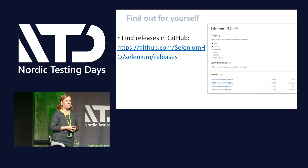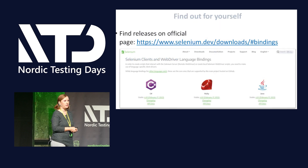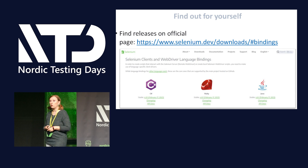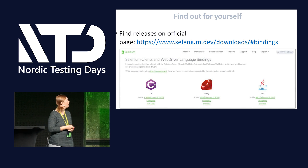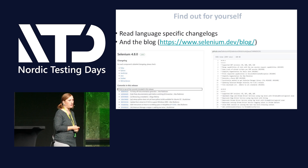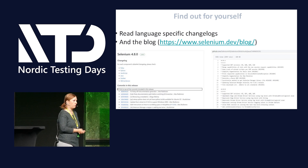That's the first place you can look to see what has been released. You can also check out our official documentation page or official home page, which is selenium.dev. In the download section you can see the currently released version, and you can read the changelog for more information. On GitHub pages we also have the list of commits going into the release.